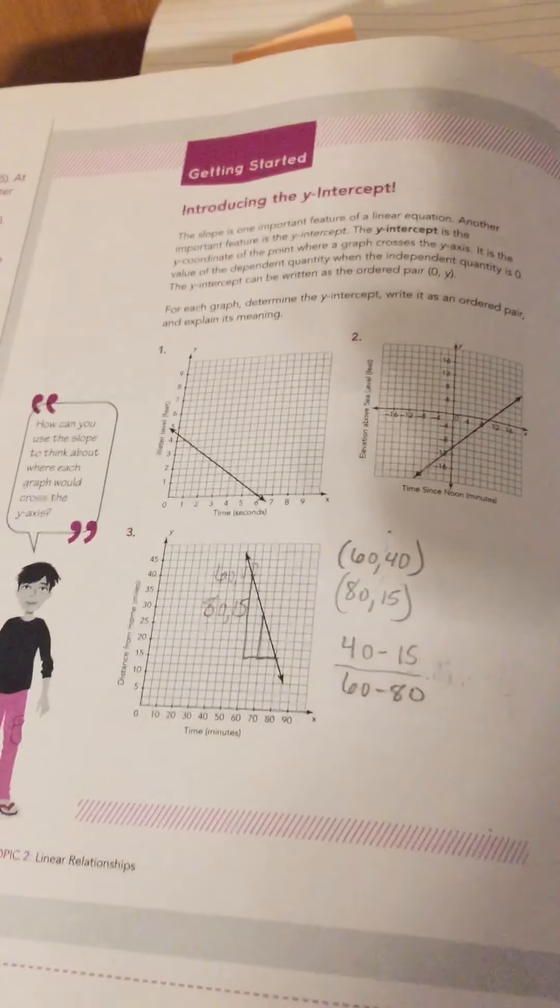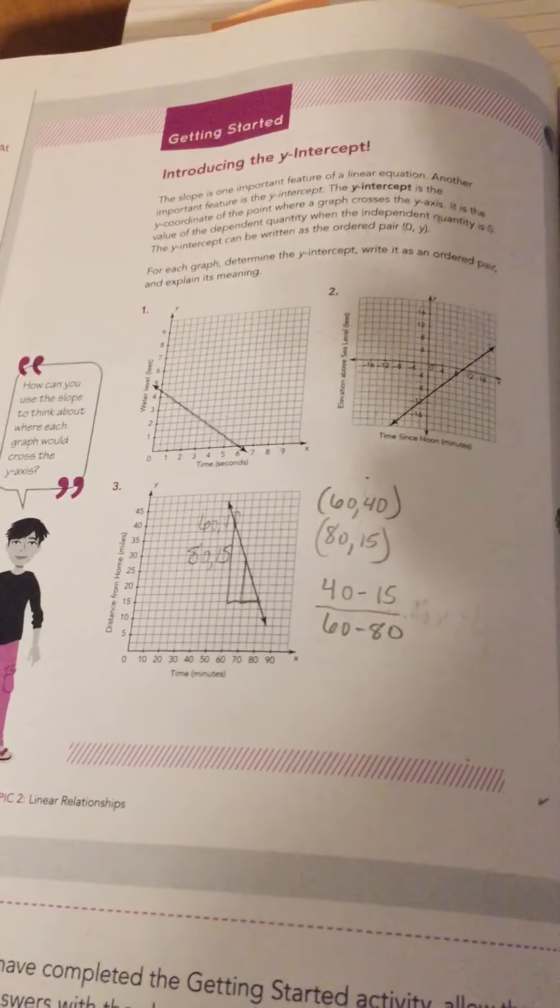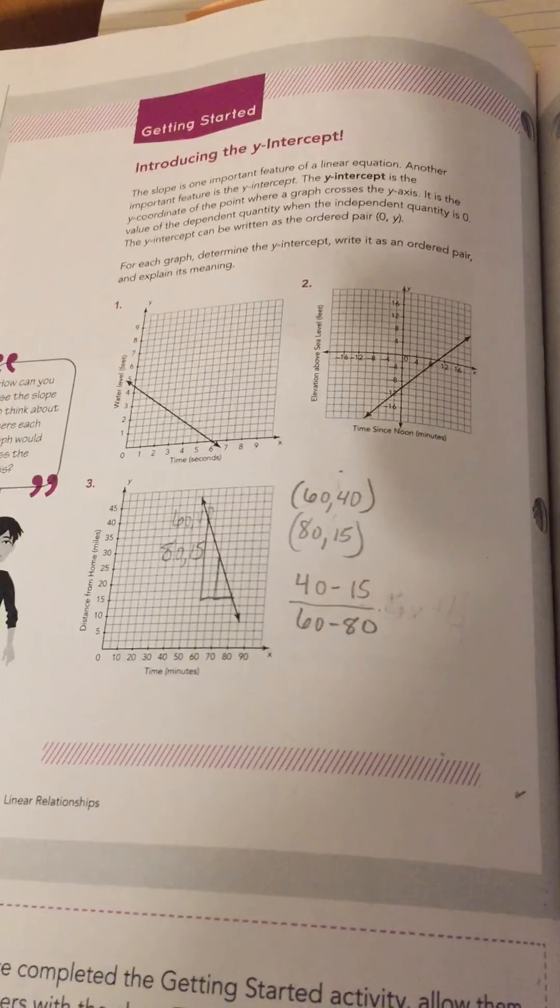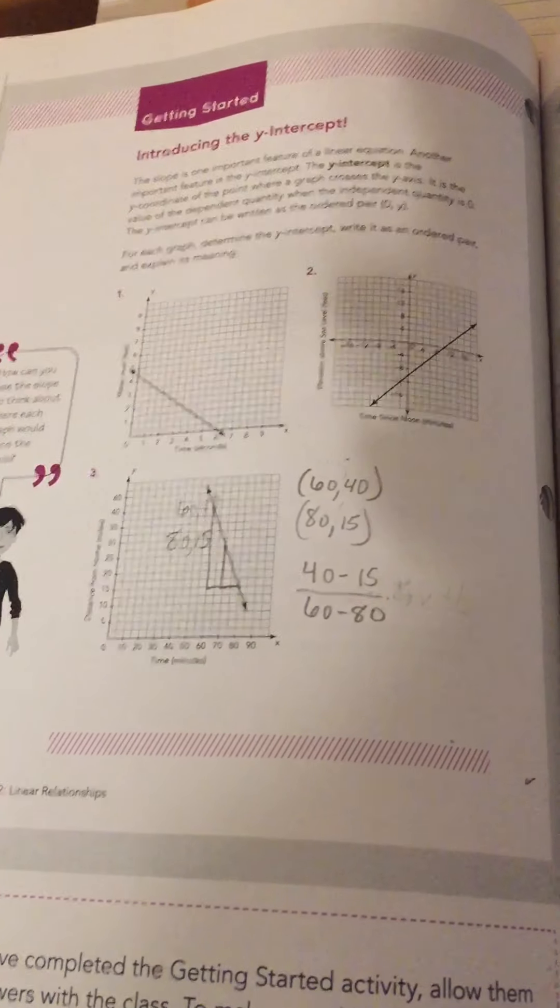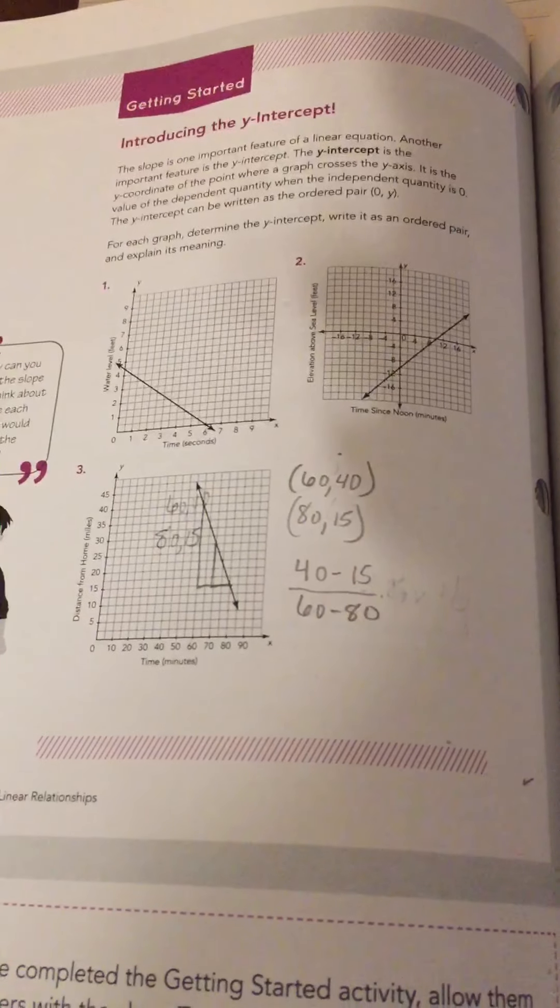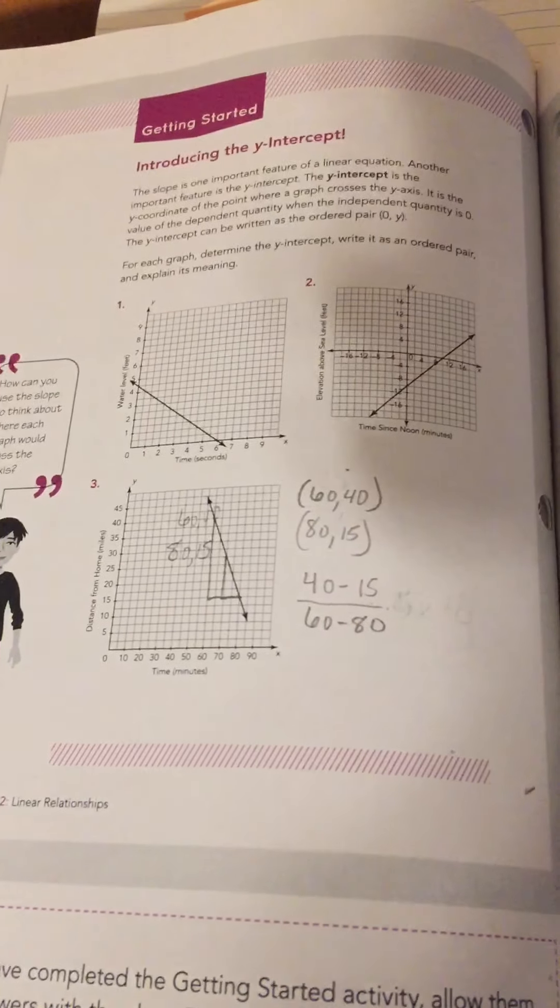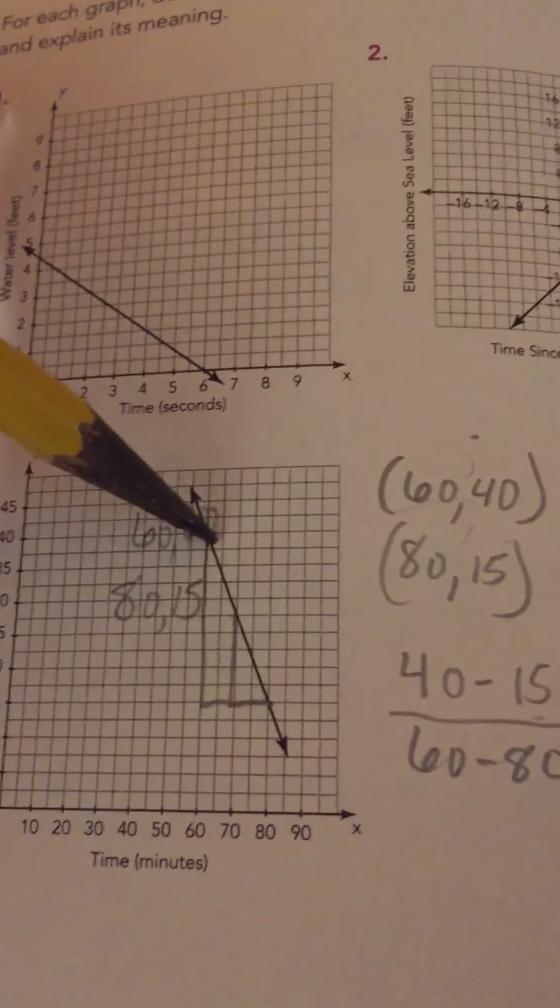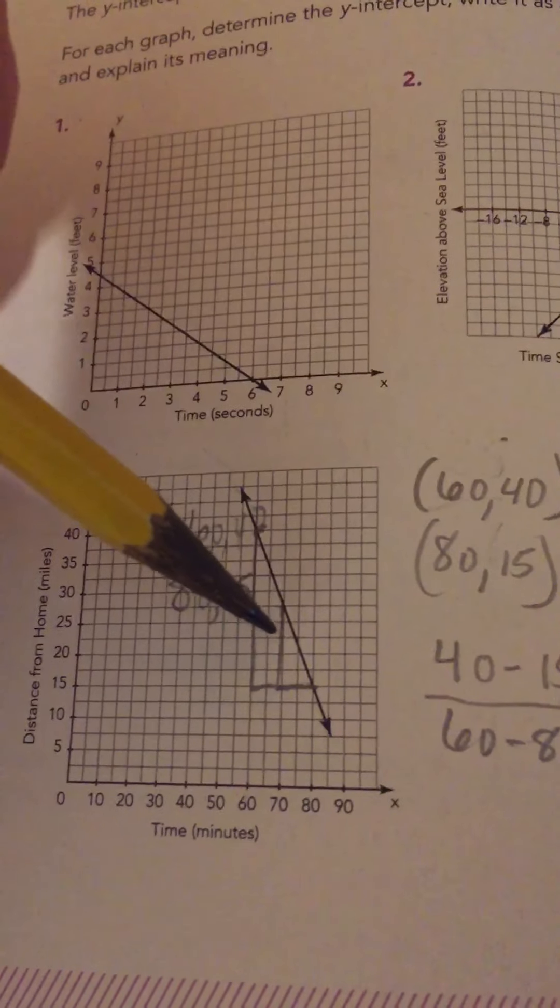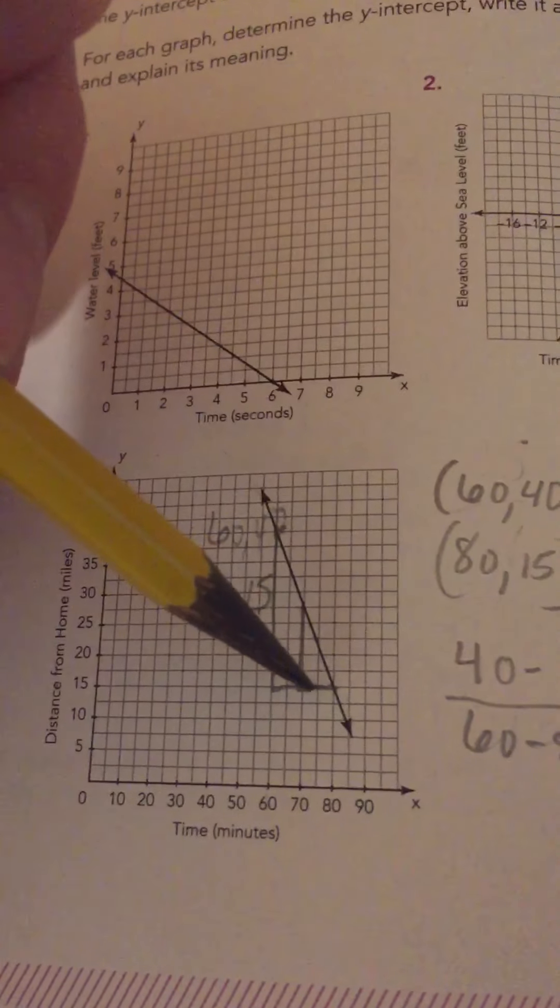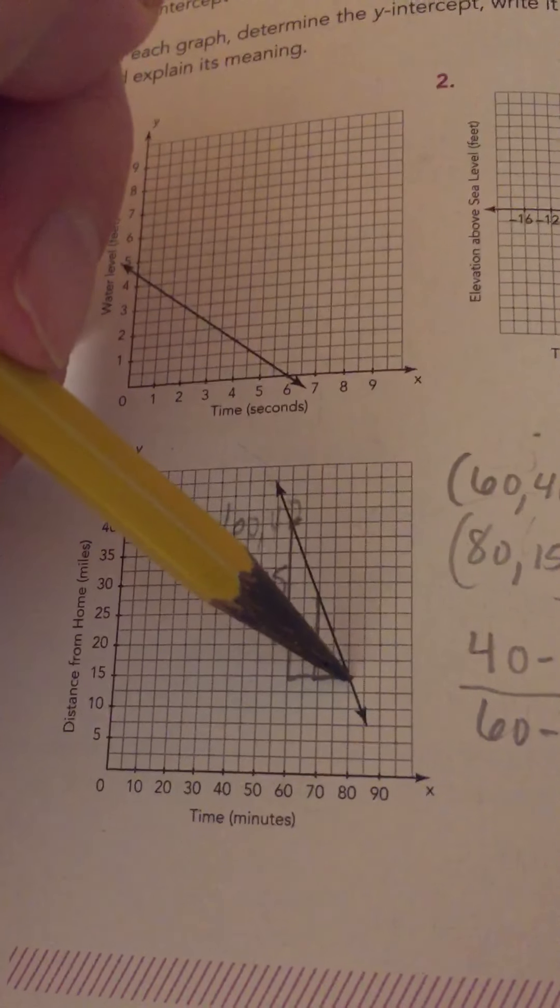So, what I could do is find the slope using our y2 minus y1 over x2 minus x1 and start creating my equation that would get me coordinates that I do know exist on the graph. So, for example, we see that there are these two points. We have here, 60, 40, and here, 80, 15.